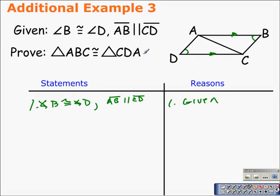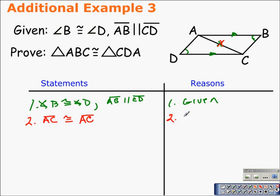In proofs, most of the time you're trying to identify angles as equal or congruent, so we would focus on alternate interior, alternate exterior, or corresponding angles. If AB and CD are parallel, angle BAC and angle DCA would be alternate interior angles. But it may be more clear if we first establish that the side they share, segment AC, is congruent to itself by the reflexive property.